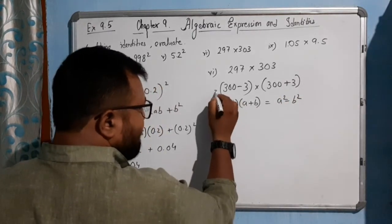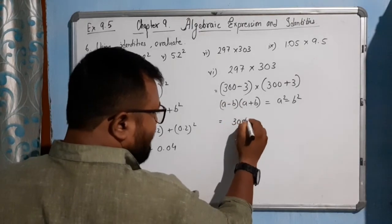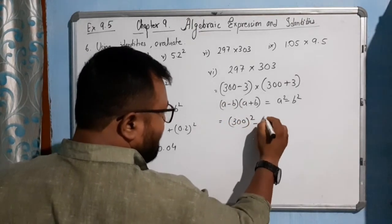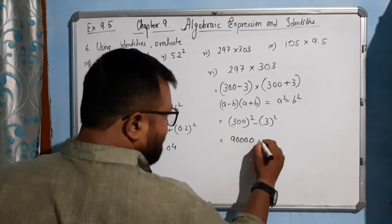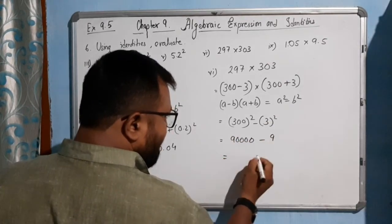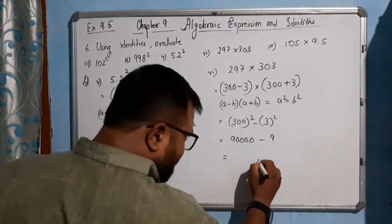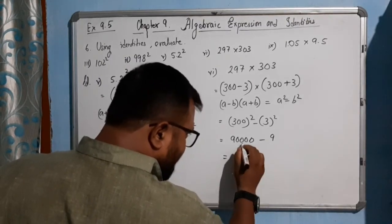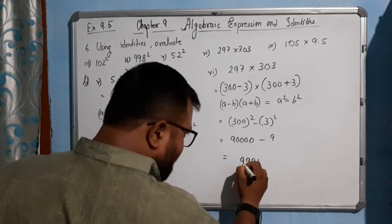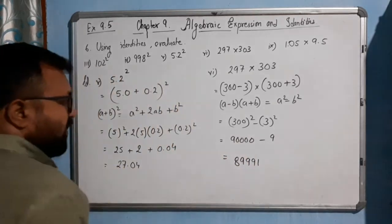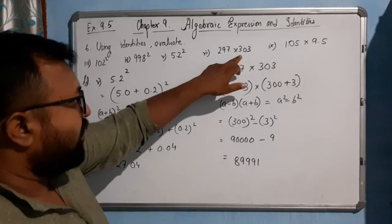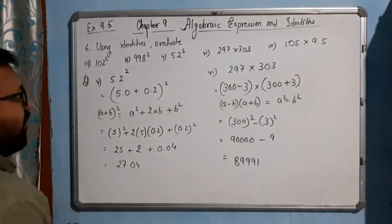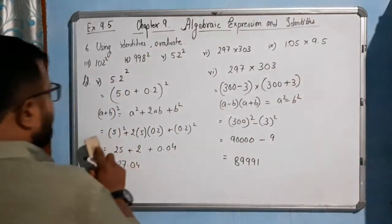It means 300 square minus 3 square. That's 90,000 minus 9, which equals 89,991. This is the answer of 297 into 303. Now come to the last option.